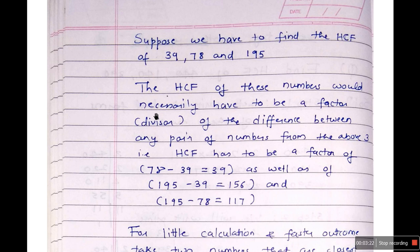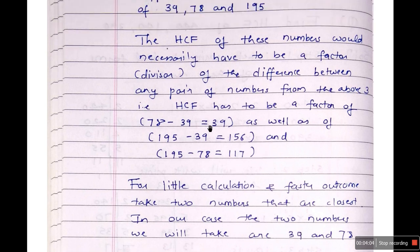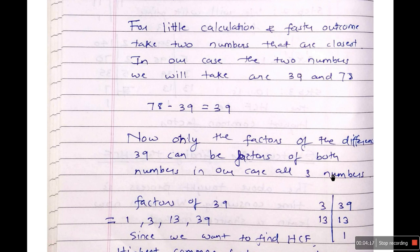Now suppose we have to find the HCF of 39, 78, and 195. The HCF of these numbers must be a factor of the difference between any pair of numbers. That is, HCF has to be a factor of 78 − 39 = 39, or 195 − 39 = 156, or 195 − 78 = 117. For faster calculation, take the two numbers that are closest — in our case 39 and 78, because their difference is 39, which is smaller than 156 or 117. Only the factors of 39 can be common factors of all three numbers.